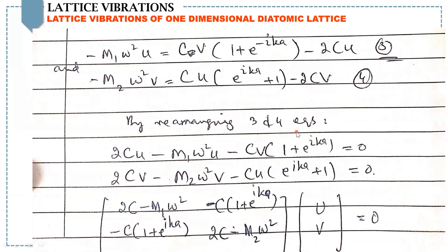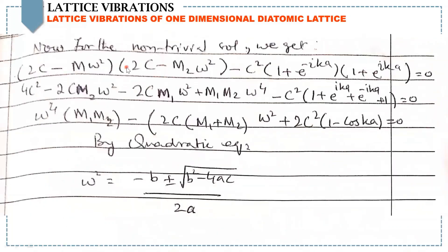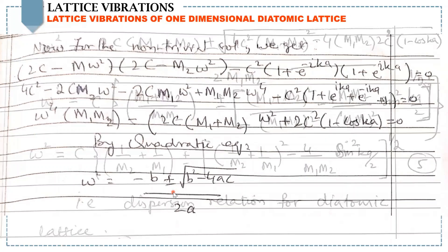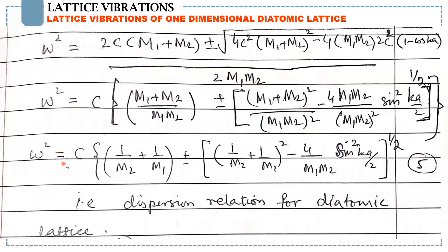By rearranging equations 3 and 4 and putting them in matrix form, we can find a non-trivial solution: (2C minus M1·ω²)(2C minus M2·ω²) minus C² times this expression equals 0. By doing some steps and using the quadratic formula, we get ω² equals C times this expression plus or minus this expression, which is nothing but the dispersion relation for the diatomic lattice.